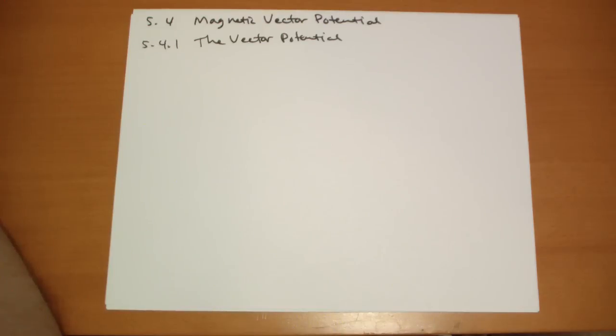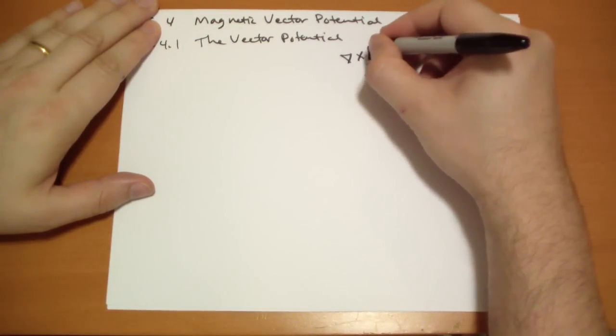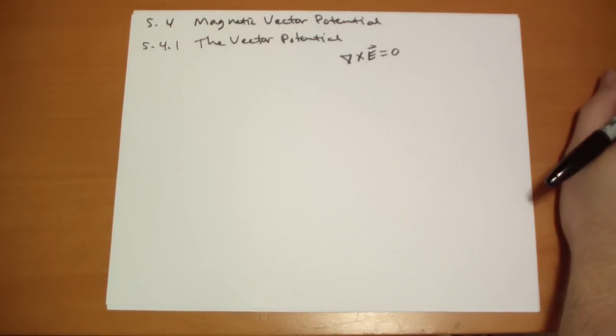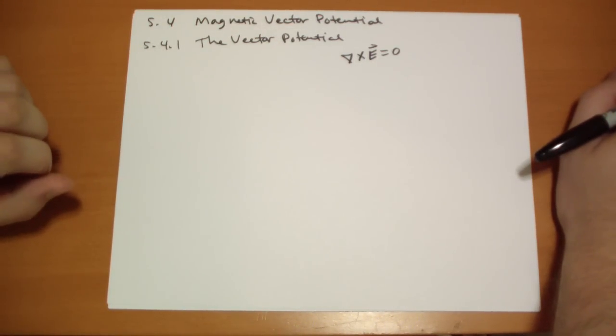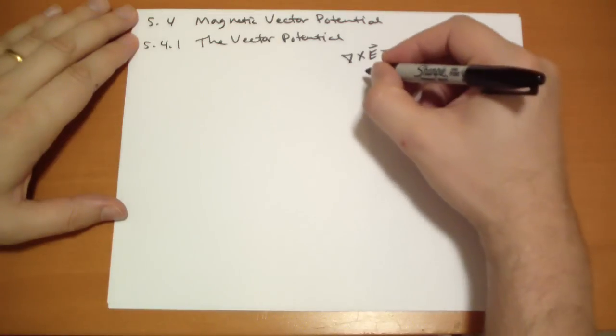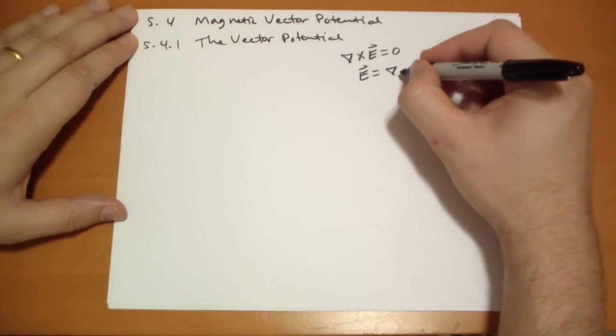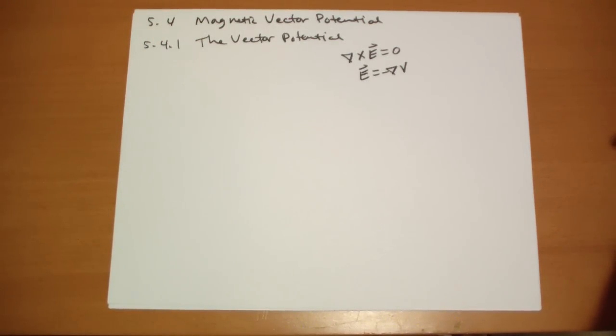So remember we decided a long time ago, or we discovered, that the curl of the E vector is always equal to zero. And we had this set of theorems back in chapter 1. Theorem 1 said that when you have a vector field whose curl is zero, then that implies, one of the things it implies, is that it's actually the gradient of some other scalar field.